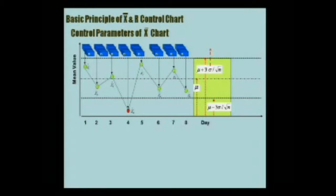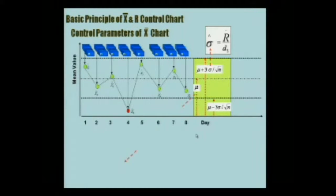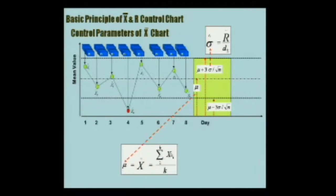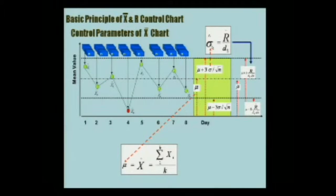The good news is we will make simple estimates. For example, if you don't know sigma and you know the range, then all what you have to do is divide the range by some constant D2, and that will give you the standard deviation. So that will make our life much easier. The average of the entire process, or the center line, is the average of all averages — the sum of X-bars divided by K, the number of samples. If we replace sigma by R-bar over D2, then we will have simpler formulas.